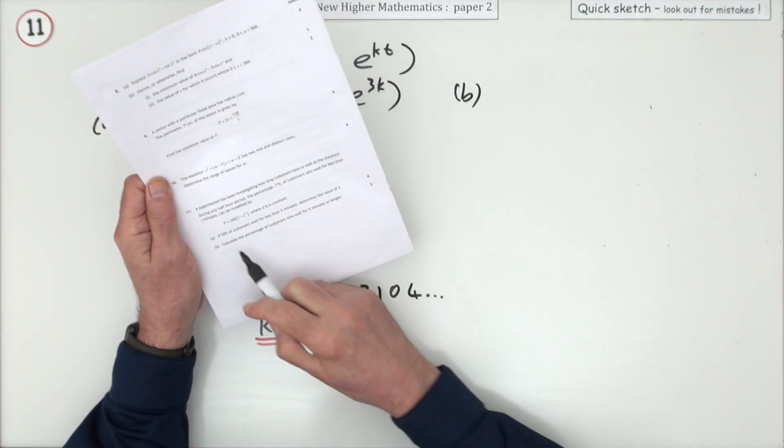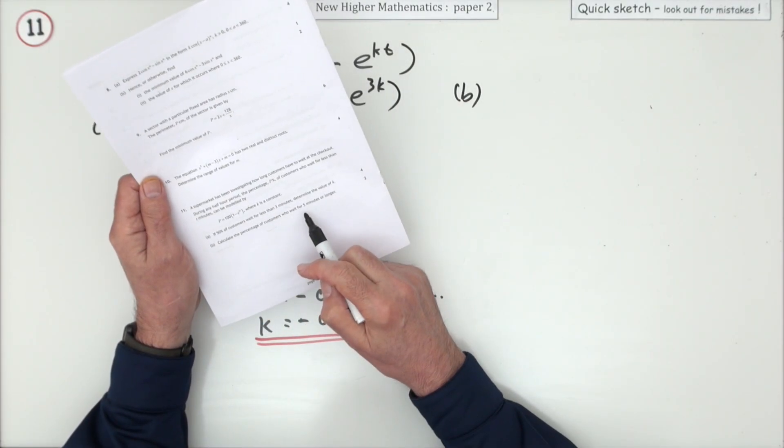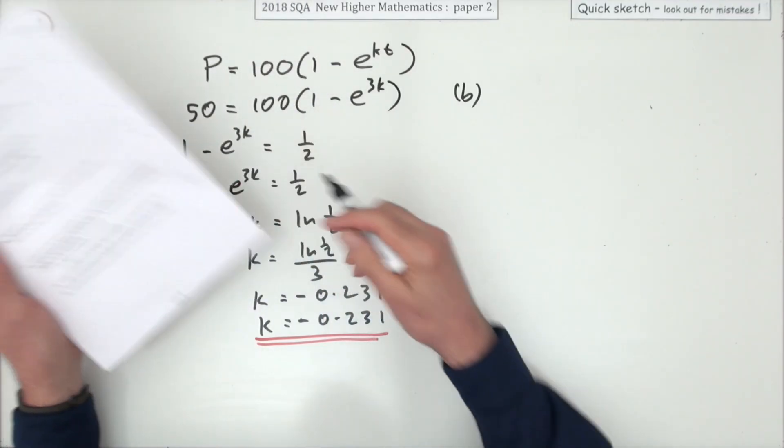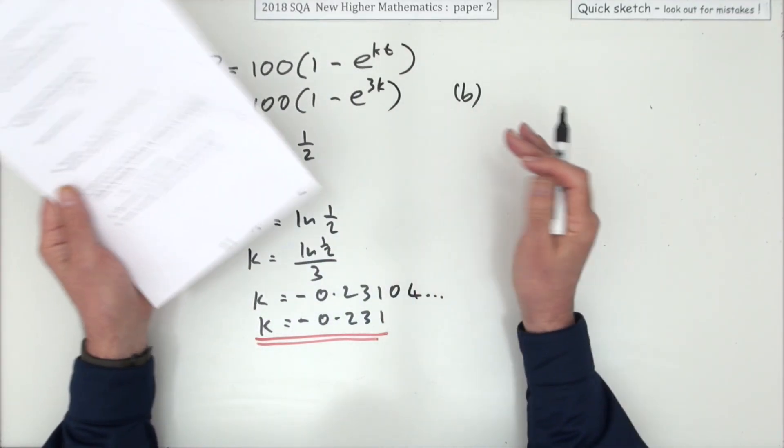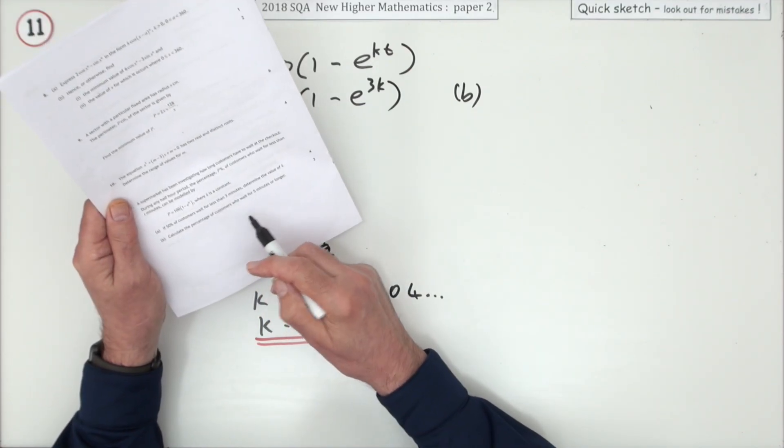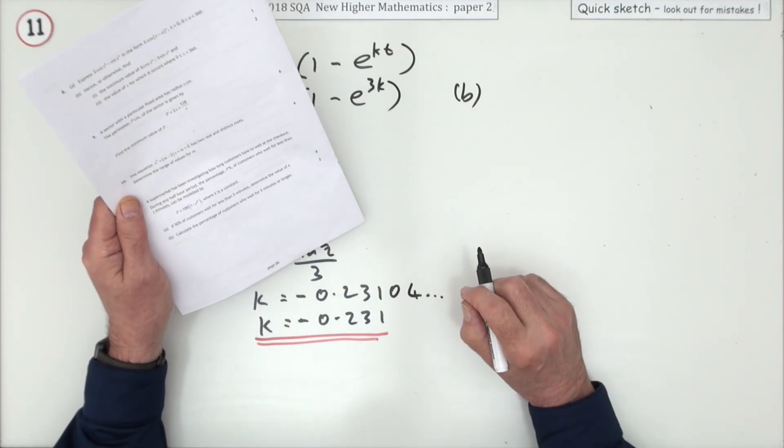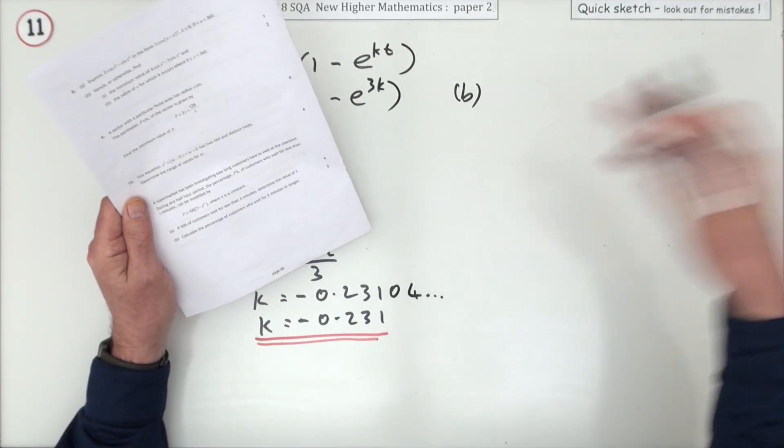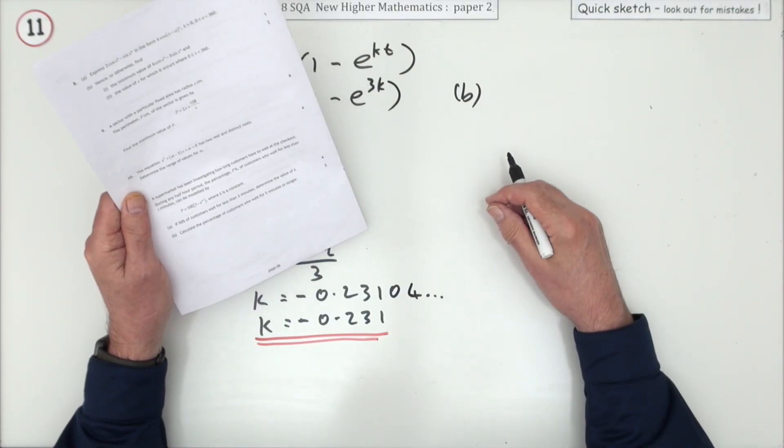Then part b: calculate the percentage of customers who wait five minutes or longer. Well that's the other way round. The percentages add up to 100, so that's equivalent to saying what percentage wait for less than five minutes, and then the one you want will be those that are left over after that.